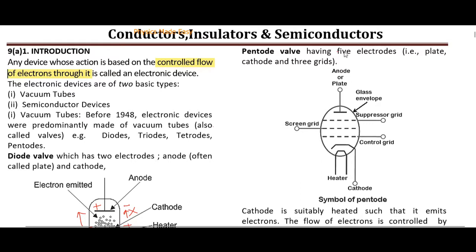In the 1940s, about 80 years ago, vacuum tubes were very famous. In old Hindi movies you can see large box-shaped radios using diodes, triodes, and pentodes. The first computer built using vacuum tubes was enormous — as large as a huge building in a city.